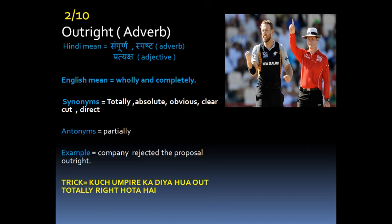The memory trick for outright: whatever an empire gives out is totally right. So break the word: out + right. Whatever is given out is totally right — so outright means totally. Antonym: partially.